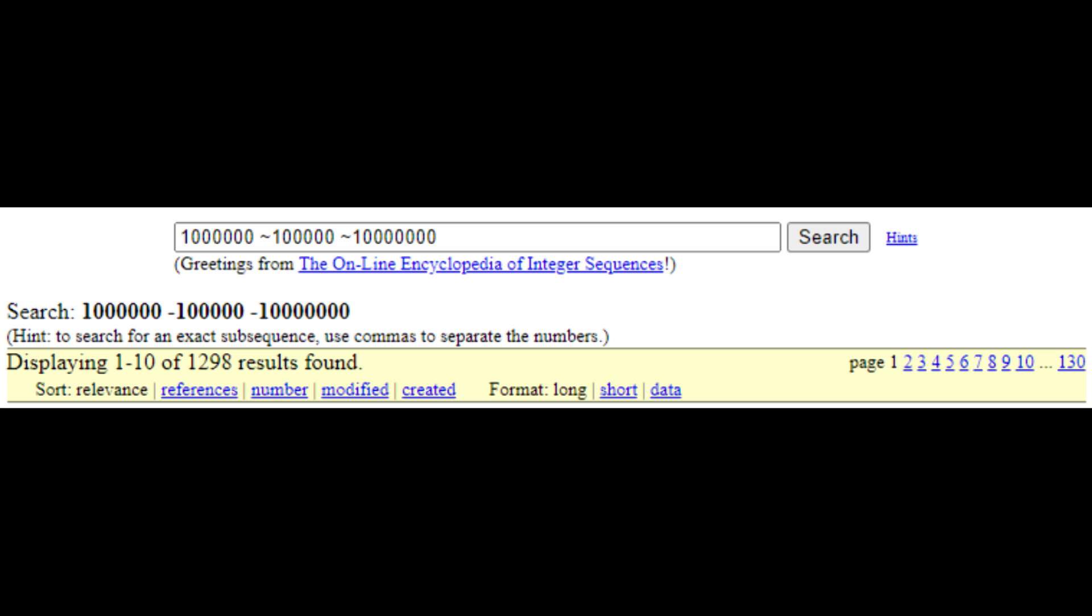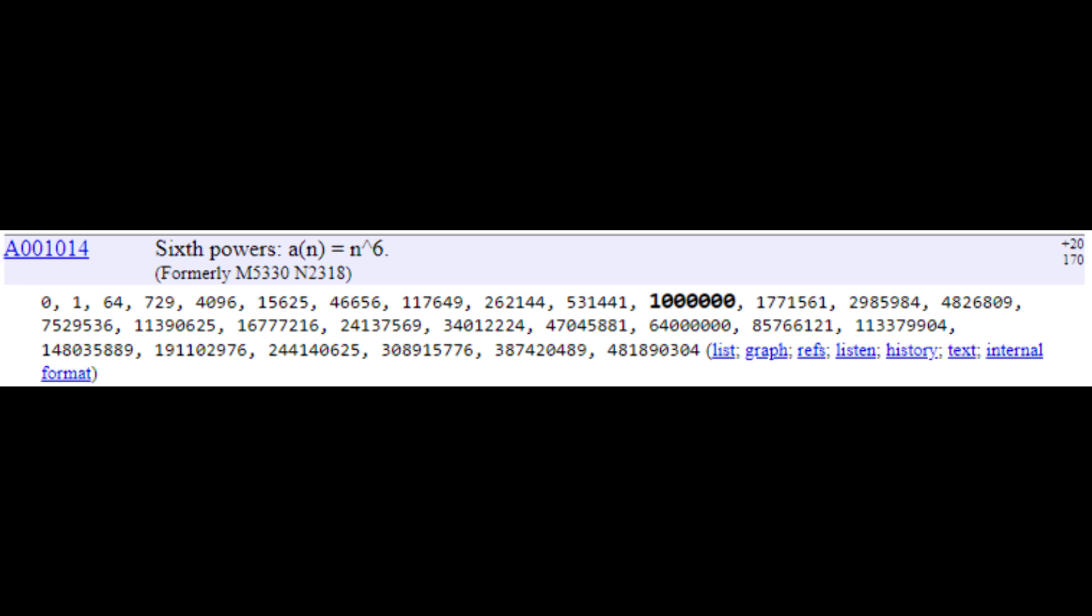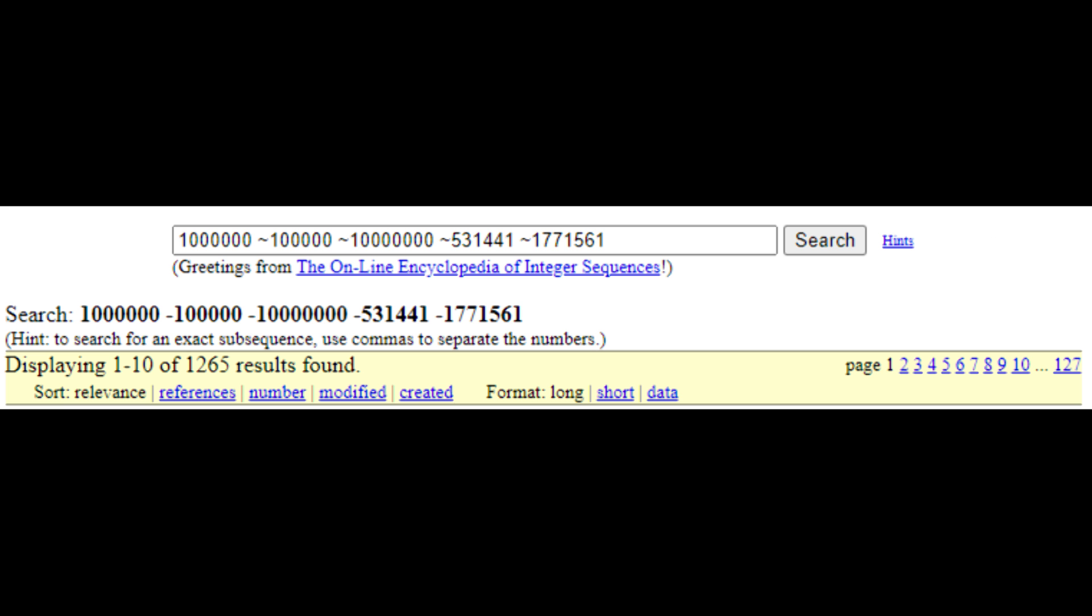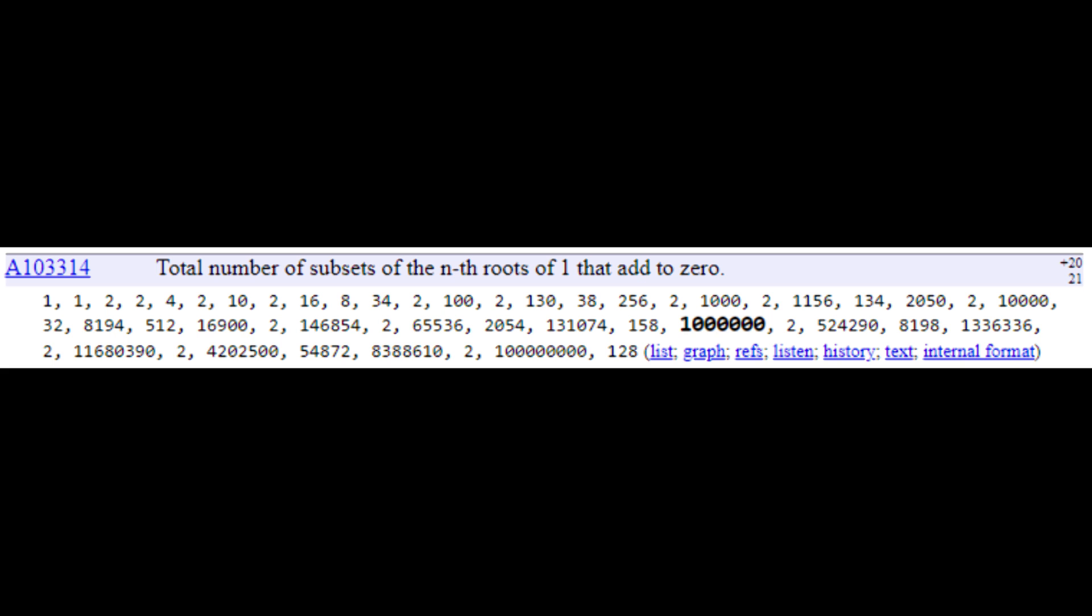Well, we can actually use the Online Encyclopedia of Integer Sequences to search for sequences that contain any individual number, which is a good way of seeing what properties a number has. Now, there are 1,703 sequences in the OEIS that contain the number one million. So the first result that shows up is that one million is a power of ten. Fair enough, but is there anything one million has going for it that a hundred thousand and ten million don't? Why this power of ten? Well, we can just exclude those from our search and find out.